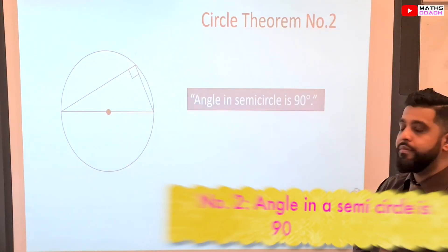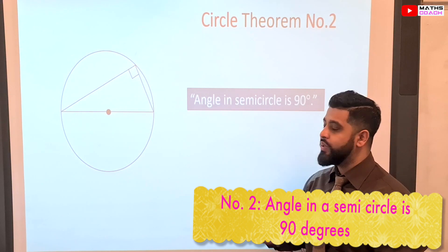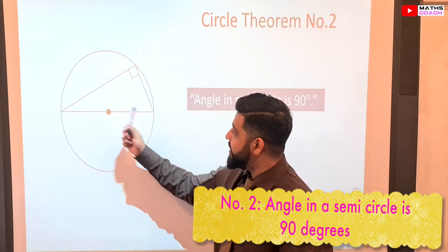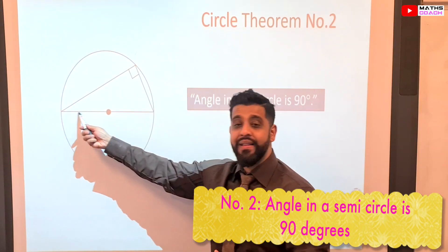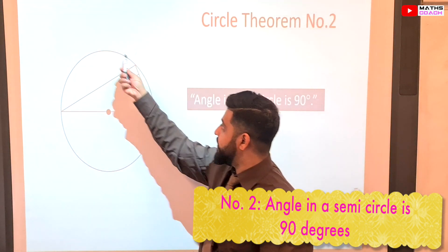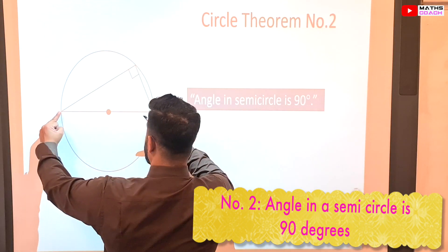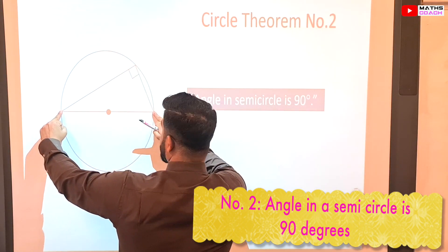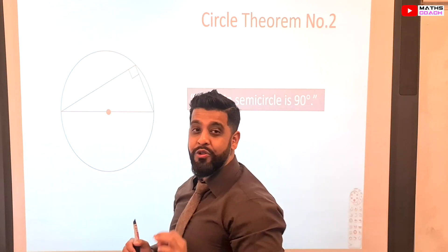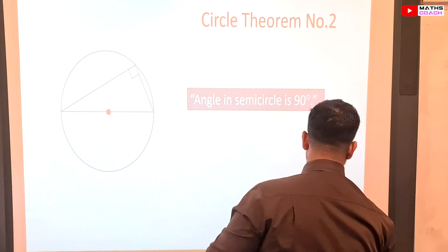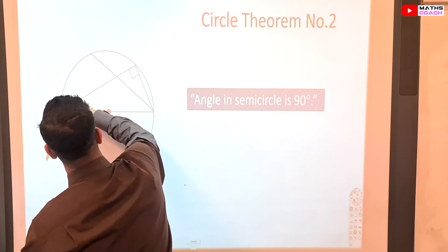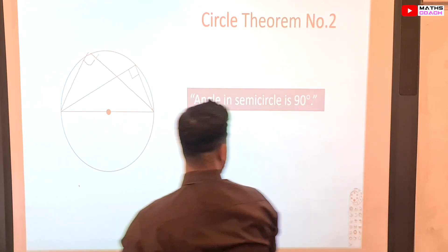Circle theorem number two: the angle in a semicircle is 90 degrees. The circle has been divided into two parts by the diameter, giving you two semicircles. From the endpoints of the diameter, any line that goes and meets the circumference will always create a 90 degree angle. I'll show you that by drawing two other lines — here and here — that will be 90 degrees.